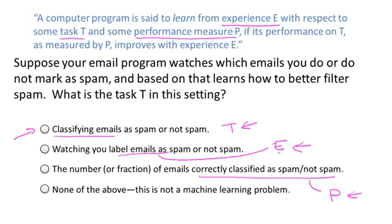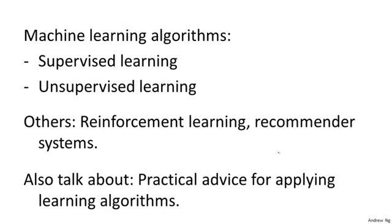In this class I hope to teach you about various different types of learning algorithms. The main two types are what we call supervised learning and unsupervised learning. I'll define what these terms mean more in the next couple of videos. In supervised learning, the idea is we're going to teach the computer how to do something, whereas in unsupervised learning, we're going to let it learn by itself. You might also hear other buzz terms such as reinforcement learning and recommender systems, but the two most used types are supervised learning and unsupervised learning.